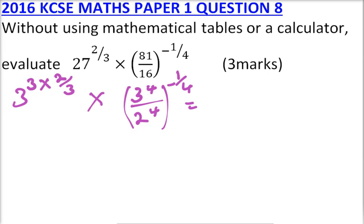So this is equal to, we open the bracket. So 3 times 3, you divide by 3 is 1, so this is 3 to power 2. You multiply by, now this is the same as 3 over 2, then 2 power 4, multiplied by minus 1 over 4.